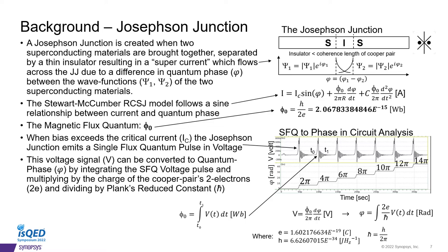When the bias for the Josephson junction exceeds the critical current Ic, the JJ will emit a single flux quantum pulse in voltage. By integrating this voltage for the time interval of the pulse, we get back our Φ₀. Multiplying this quantity by the two electron charge and dividing by Planck's reduced constant will express the quantum phase value for the JJ's anode within the circuit context.